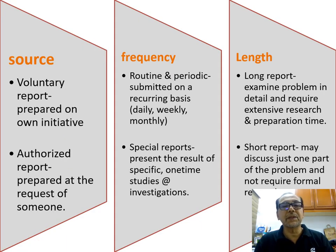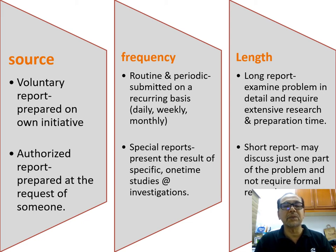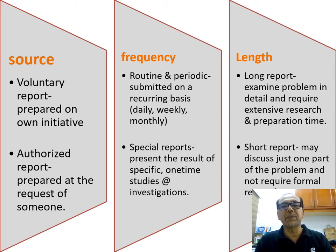Regarding source: there are voluntary reports — prepared on the writer's own initiative — and authorized reports — prepared on request of someone. For example, you voluntarily send a report to the bank saying you want to borrow a 1 million loan. Then the bank sends back an authorized request asking you to give a specific report for your loan application, and you prepare that authorized report. Regarding frequency: there are routine and periodic reports submitted on a recurring basis.